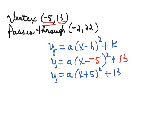Now the other fact we know is that whenever x is negative 2, y is 22. So if we substitute 22 for y and we substitute negative 2 for x, we now have an equation in terms of the variable a and we can solve for a.